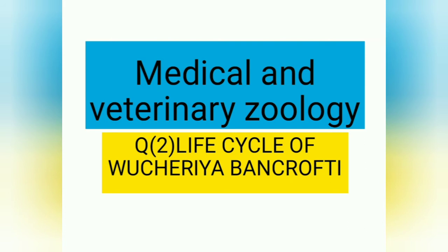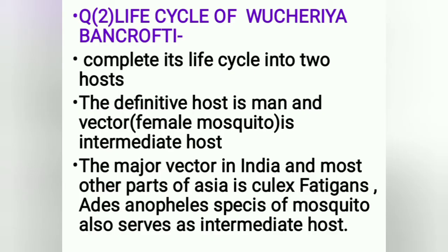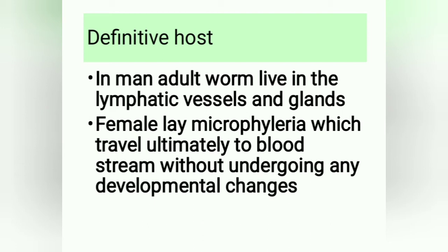Our second question is the life cycle of Wuchereria bancrofti. It completes its life cycle in two hosts. The definitive host is man, and the vector — the female mosquito — is the intermediate host. The major vector in India and most parts of Asia is Culex fatigans; Aedes and Anopheles species also serve as intermediate hosts. In man, adult worms live in the lymphatic vessels and glands; females lay microfilaria which travel to the bloodstream without undergoing developmental changes.